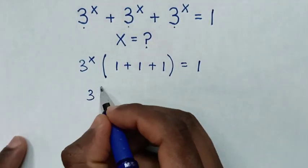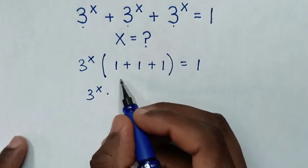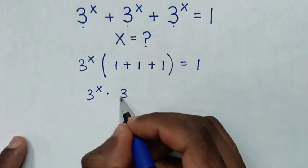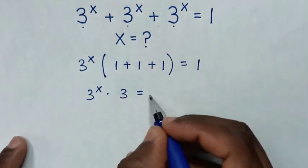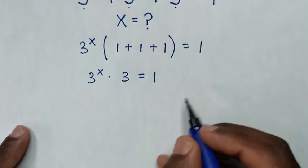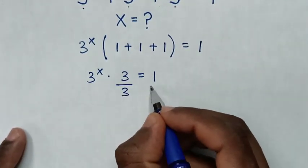it will be 3^x times 1 plus 1 plus 1 is 3, is equal to 1. Then we'll divide by 3 on both sides.